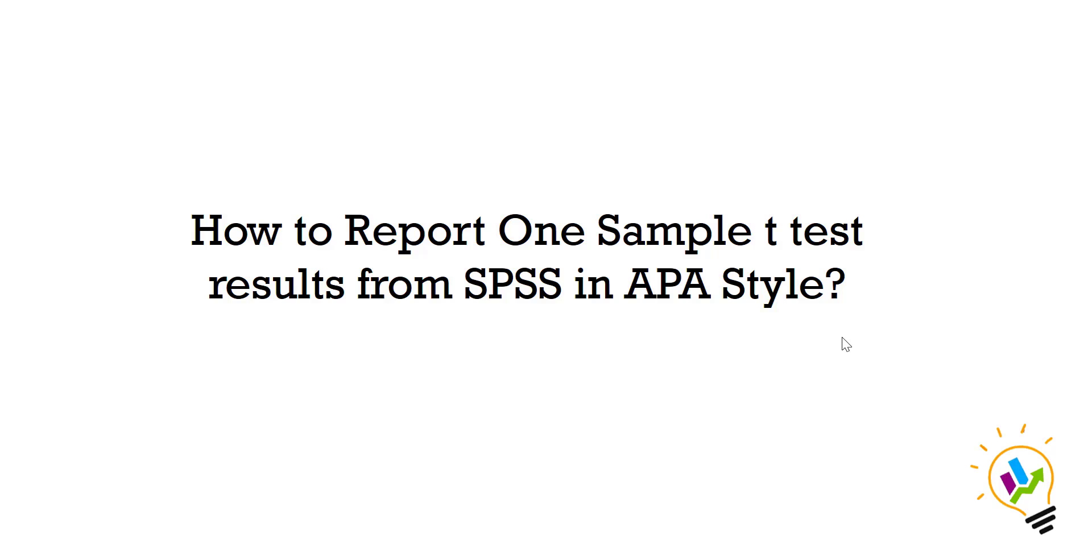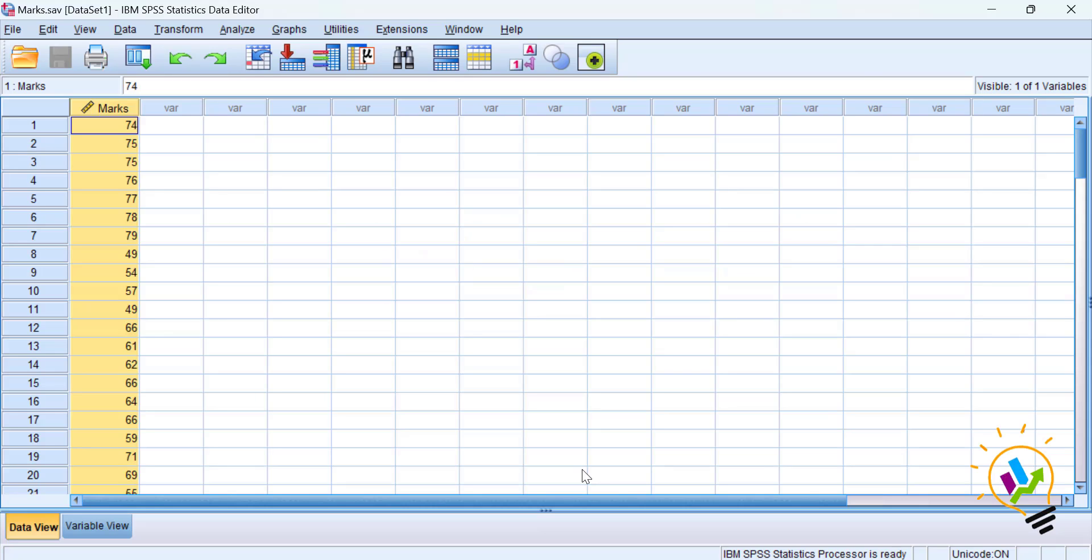Hello, welcome to My Easy Statistics. In this video, I'm going to discuss how to report one-sample t-test results from SPSS in APA style. I'm taking an example of 107 student marks. Consider these 107 students as a group, and we want to compare if there's any significant difference between this group's mean value to the college mean value.